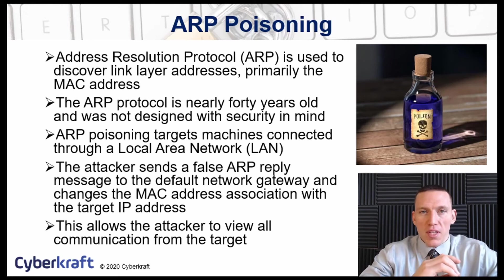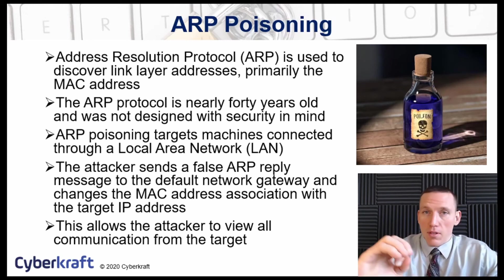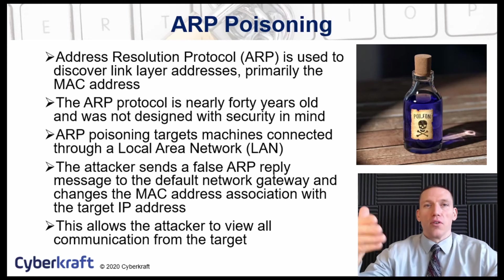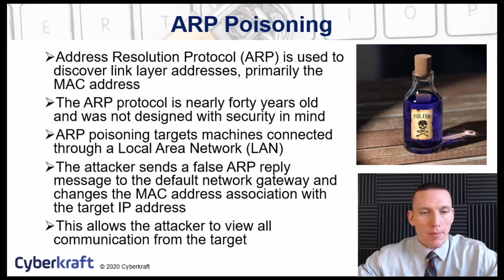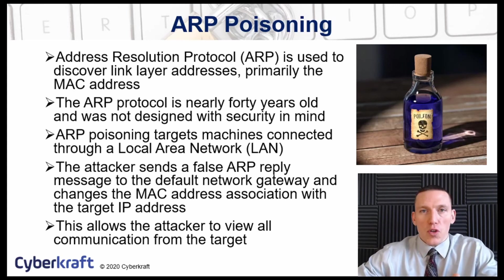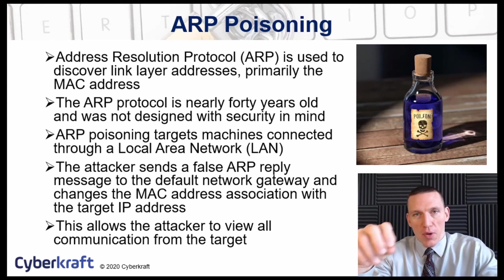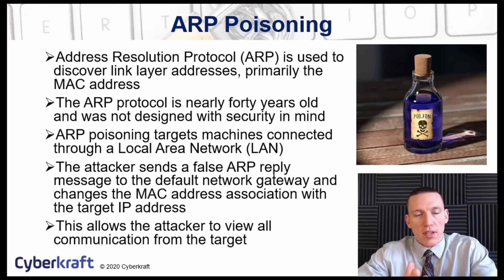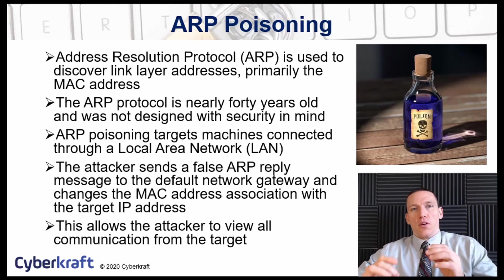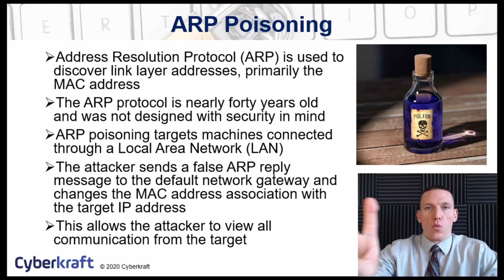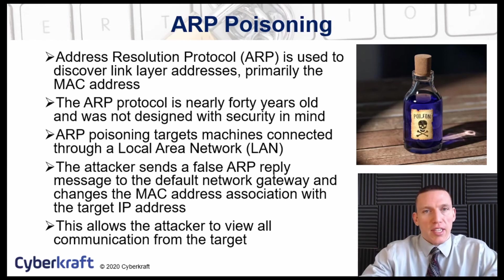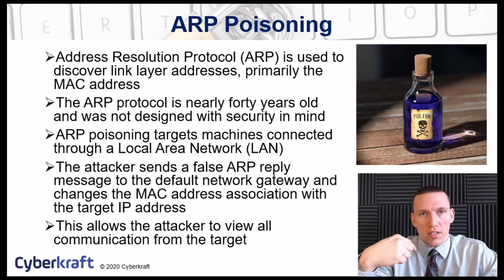The local area network sends communications to the MAC address of the legitimate target, but now the attacker has changed their MAC address to match that target, so the attacker receives the communication instead. This is done by sending false ARP reply messages to the network gateway. In essence, you're changing the association between the MAC address and the target IP address, so all traffic is redirected to the attacker.